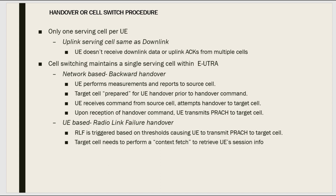Or if the downlink power in a particular cell goes below a certain threshold, that can also trigger an RLF. When RLF is triggered and the UE has data to send, it must connect to a particular eNodeB and performs RACH onto the target cell. It is then the duty of the target cell to perform a context fetch about this particular UE from the source cell — the cell this UE was previously camped on. This happens over the X2 interface, where the target network requests the UE context. If the source network responds back, the link is established; otherwise, the UE has to start the connection afresh.